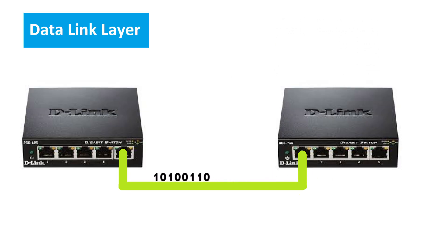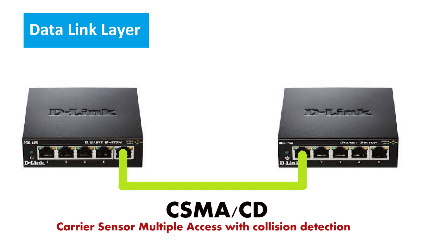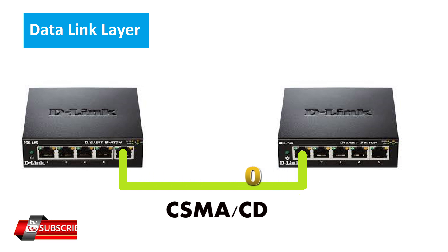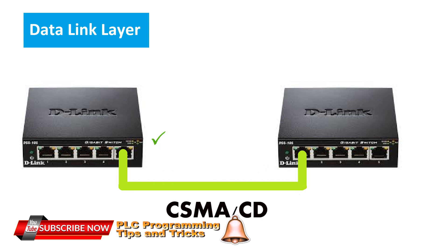Ethernet transmits data packets in the data link layer using an algorithm called CSMA-CD, which stands for carrier-sense multiple access with collision detection. This algorithm is used to reduce data collisions and increase successful data transmissions. It first checks if there is any traffic on the network. If there is none, it sends the first bit of information to see if a collision will occur. If successful, it sends the remaining bits while still testing for collisions. If a collision occurs, the algorithm calculates a waiting time and restarts the process until the transmission is completed.